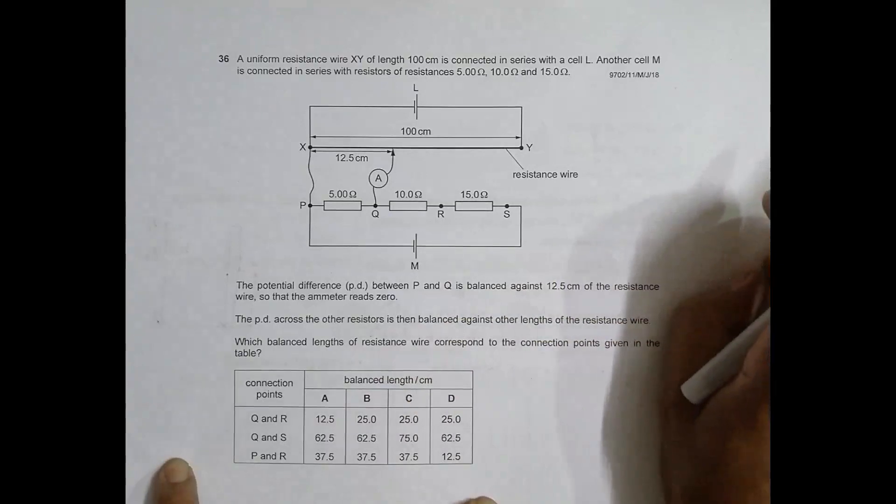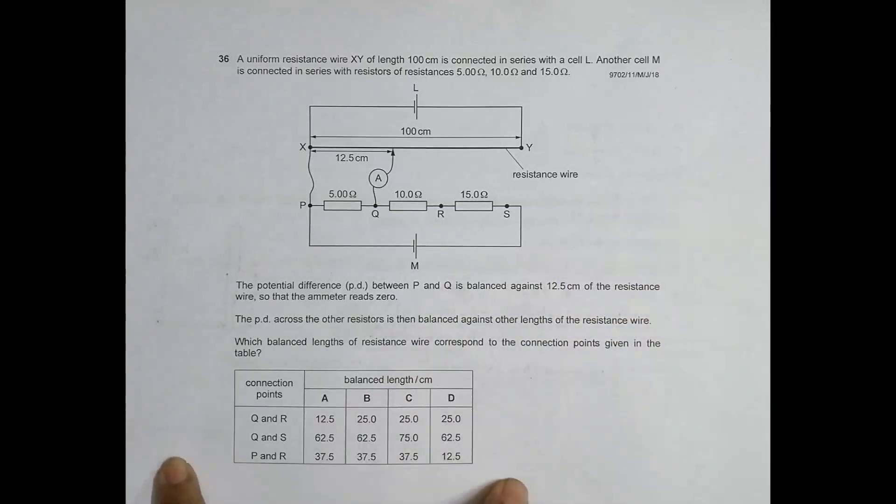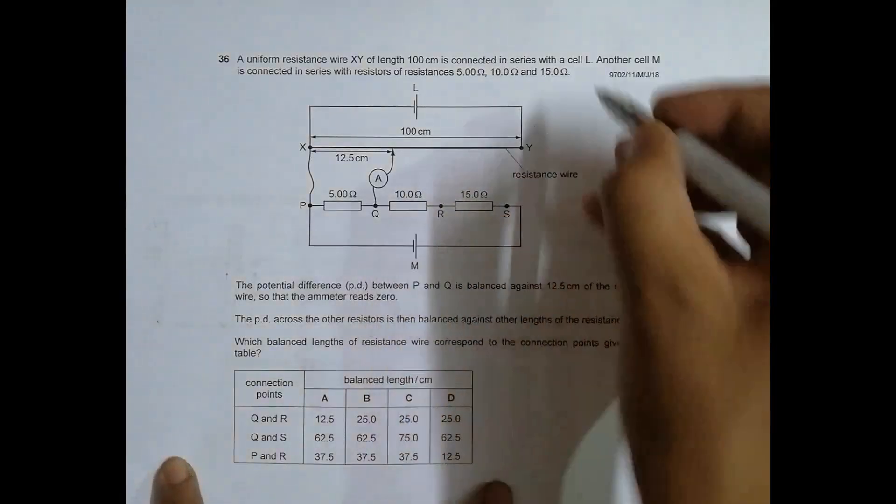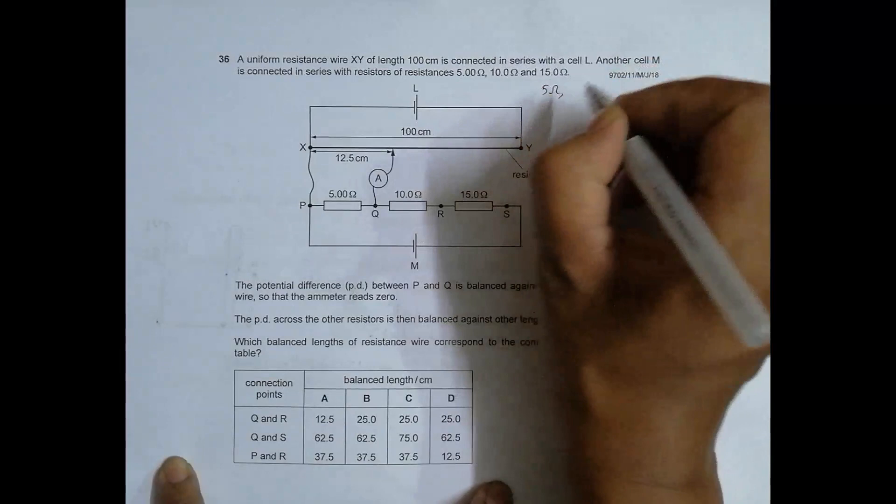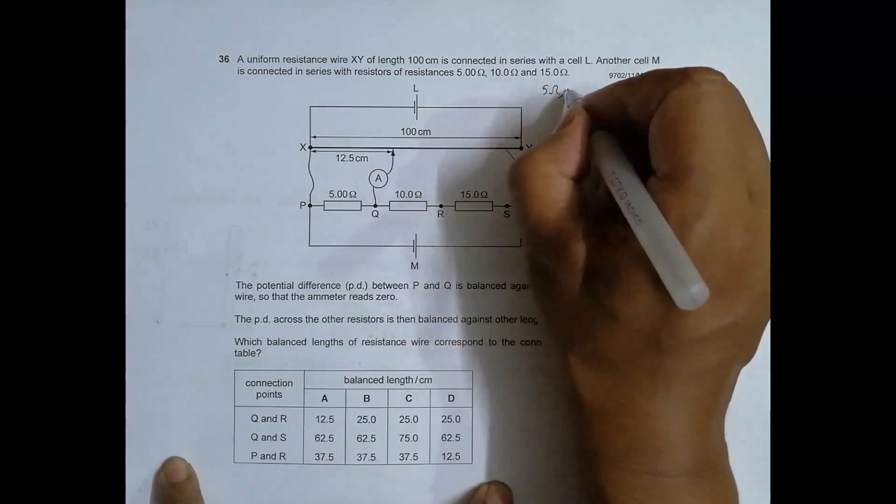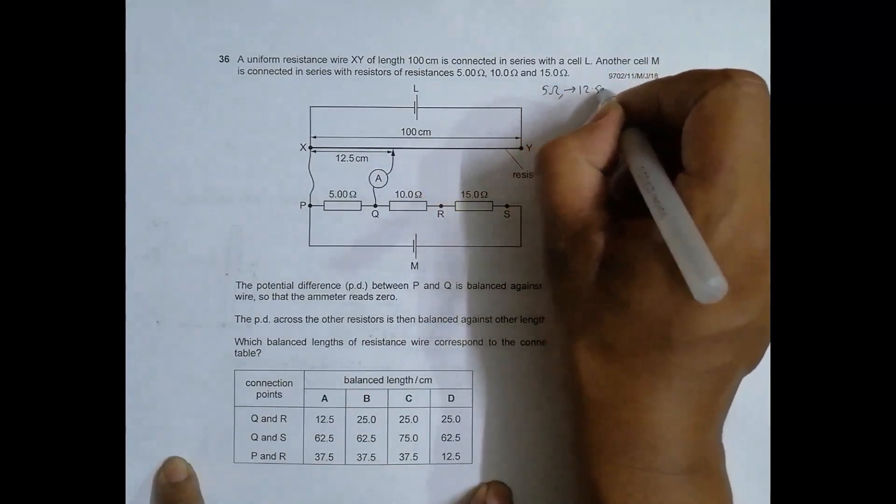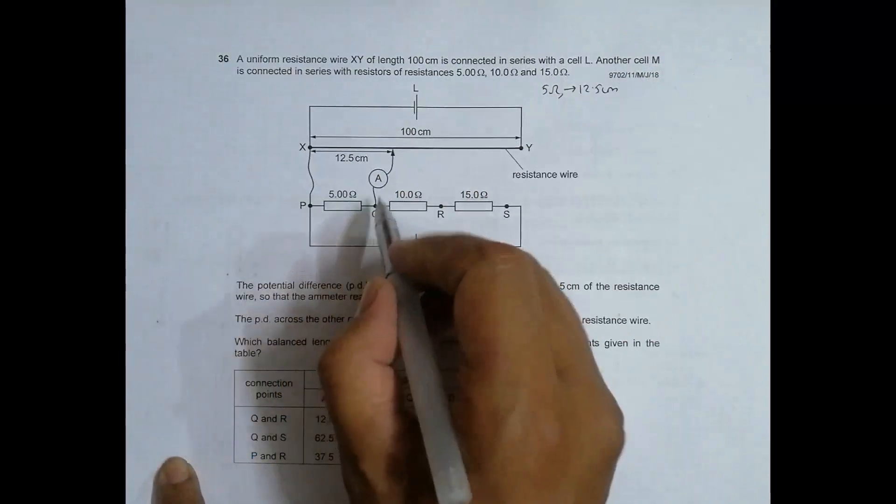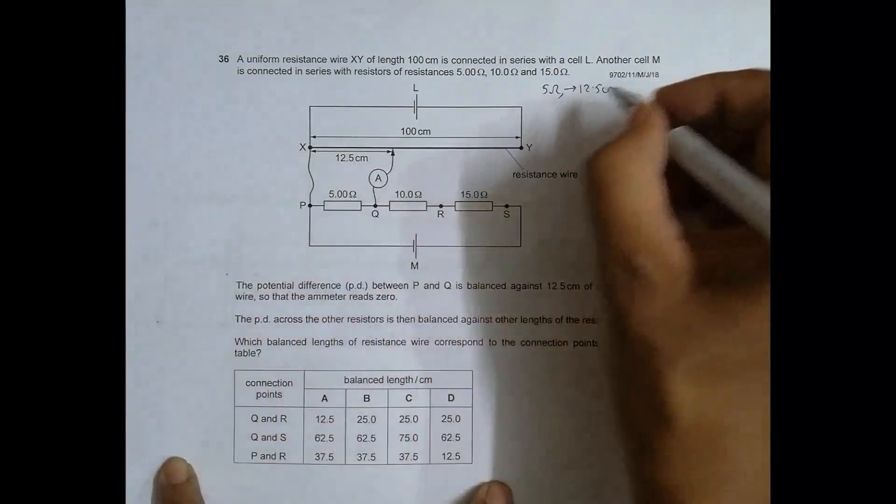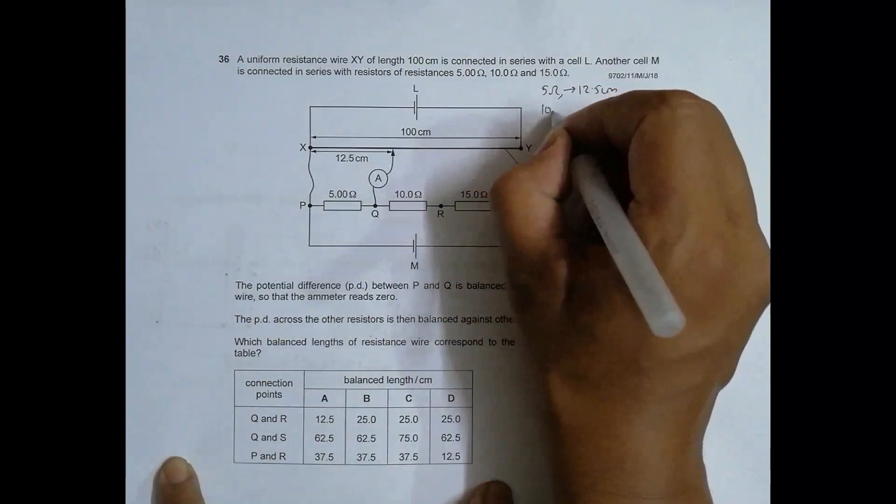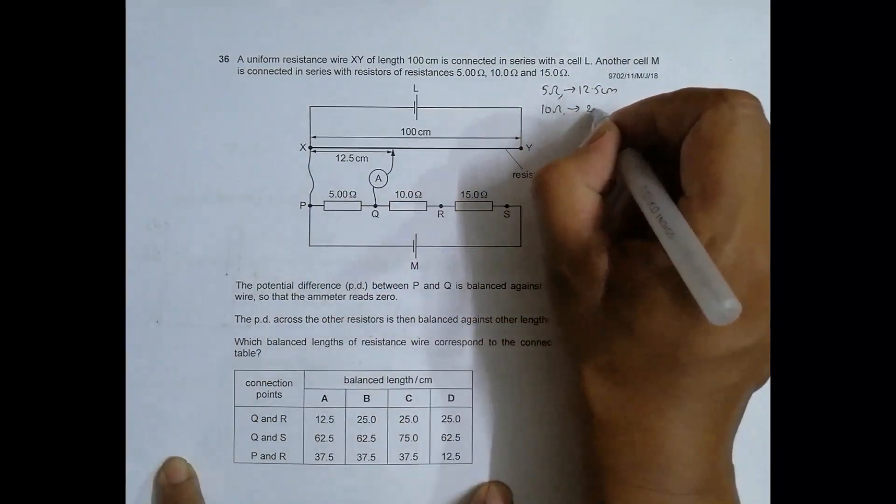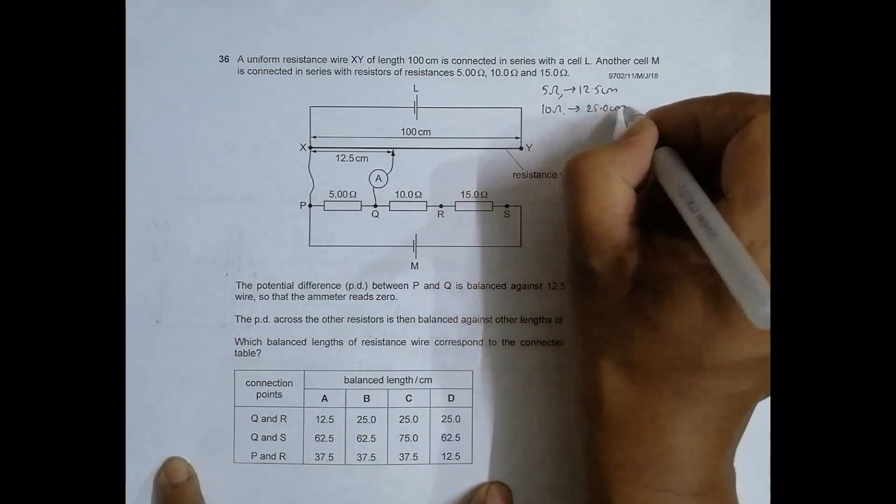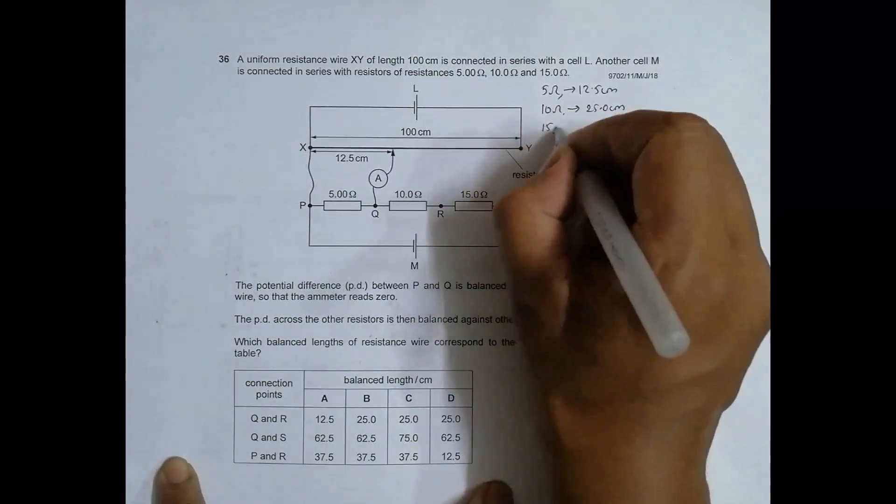We have to identify which set of balance lengths will be correct. For 5 ohm, the balance length is equal to 12.5 centimeters. For 10 ohm, the balance length will be equal to twice that which is 25.0 centimeters. And for 15 ohm, the balance length should be thrice that which is equal to 37.5 centimeters.